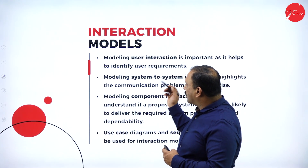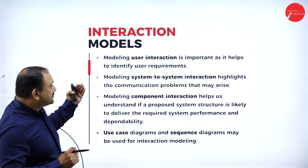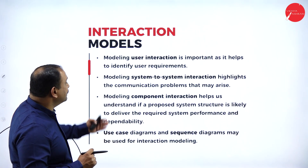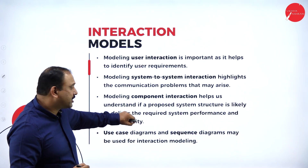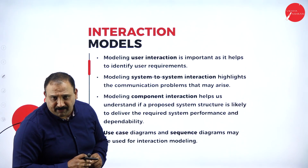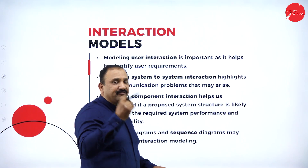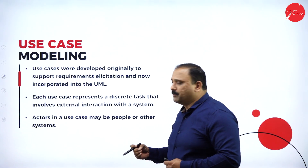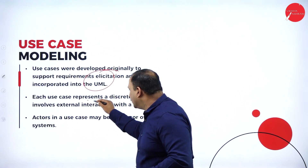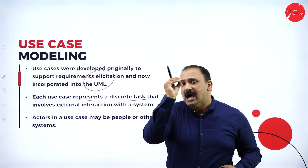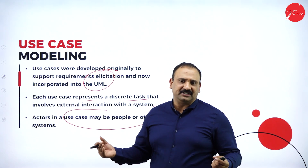Interaction models are very important because they highlight what is the system-to-system level interaction. The modeling of component interaction determines whether a proposed system structure is likely to deliver the required system performance. The use case diagram and sequence diagram are used for interaction-level modeling. Use case modeling is developed to support requirements elicitation and represents a discrete task — telling how that task needs to be performed. Actors used in a use case may be people or any other systems.